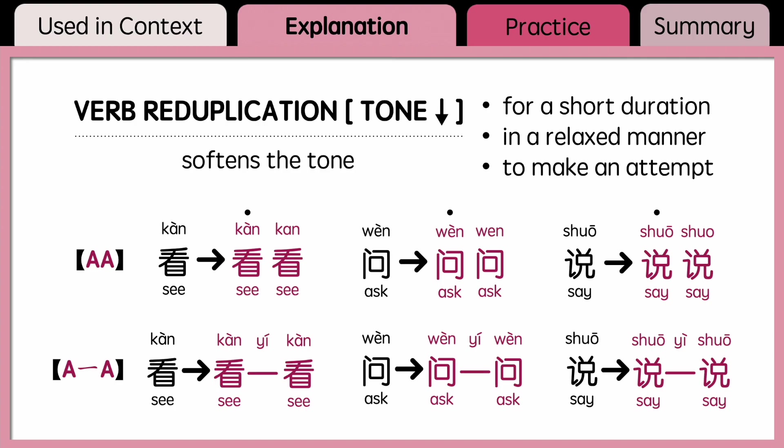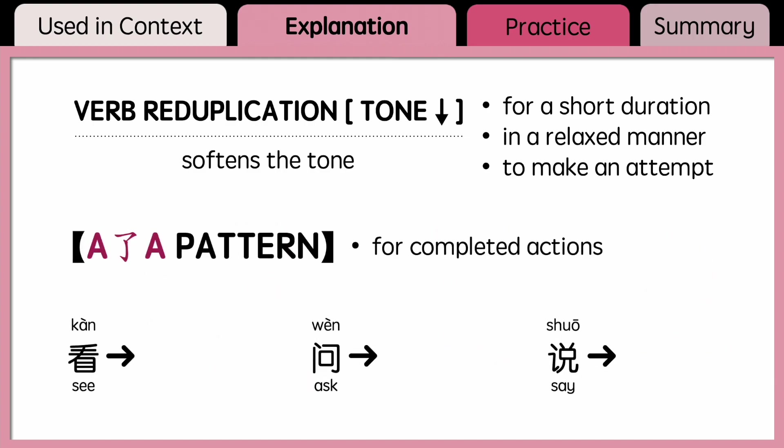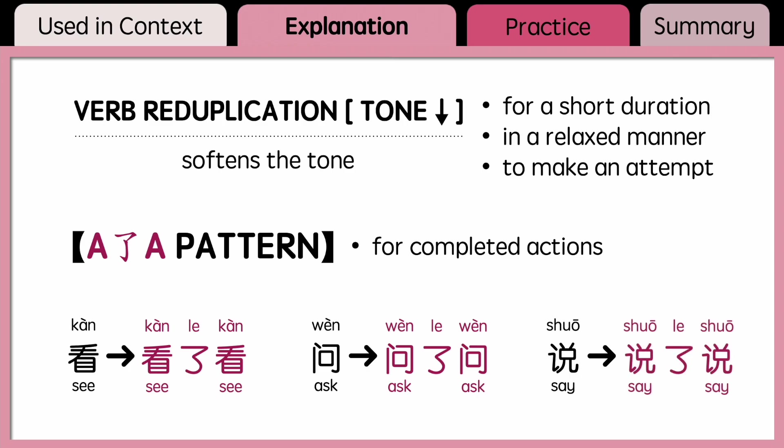However, it's not the case if you add 一 in between. When you add 一, you still pronounce each verb with their original tones. If the action is completed, you can add 了 after the base verb and say 看了看, 问了问, or 说了说.